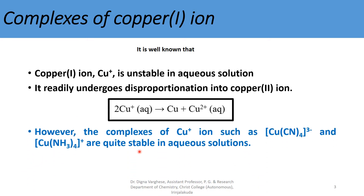The complexes of copper(I) ion, such as tetracyanidocuprate and tetramine copper(I), are quite stable in aqueous solution. So an unstable metal ion can be stabilized by the formation of a complex. This is an application of coordination chemistry.